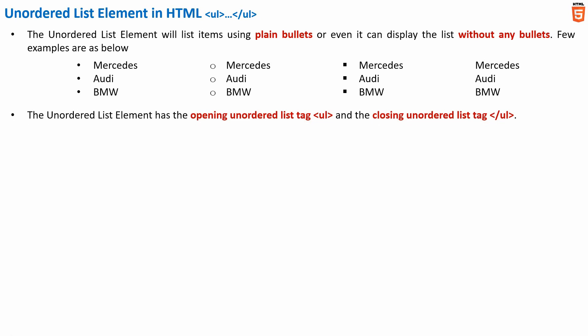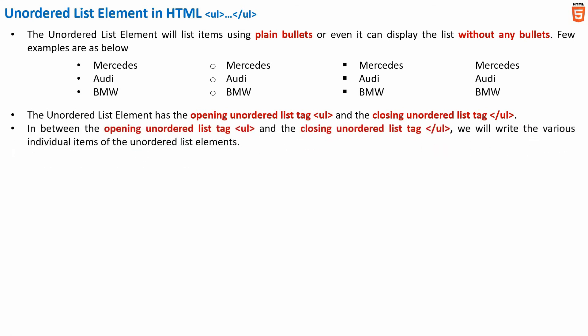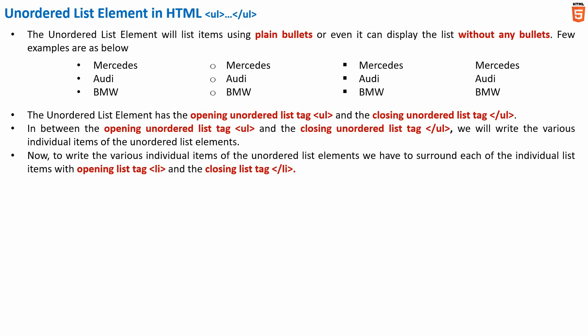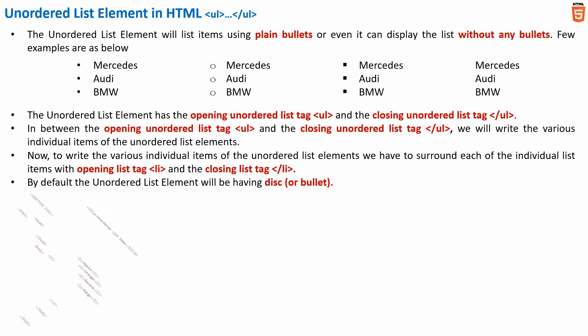The unordered list element has an opening unordered list tag represented by ul and a closing unordered list tag. In between the opening and closing unordered list tags we write the various individual items of the unordered list. Each individual list item must be surrounded with an opening list tag and a closing list tag. By default, the unordered list element will have the list item marker as disk or bullet.